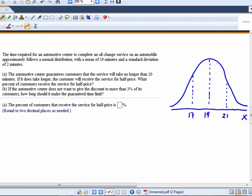In this particular problem, we want to know the proportion of oil changes that are going to last longer than 20 minutes, because we want to know what proportion of customers are going to get half off. So the area of that shaded region is what we're looking for.